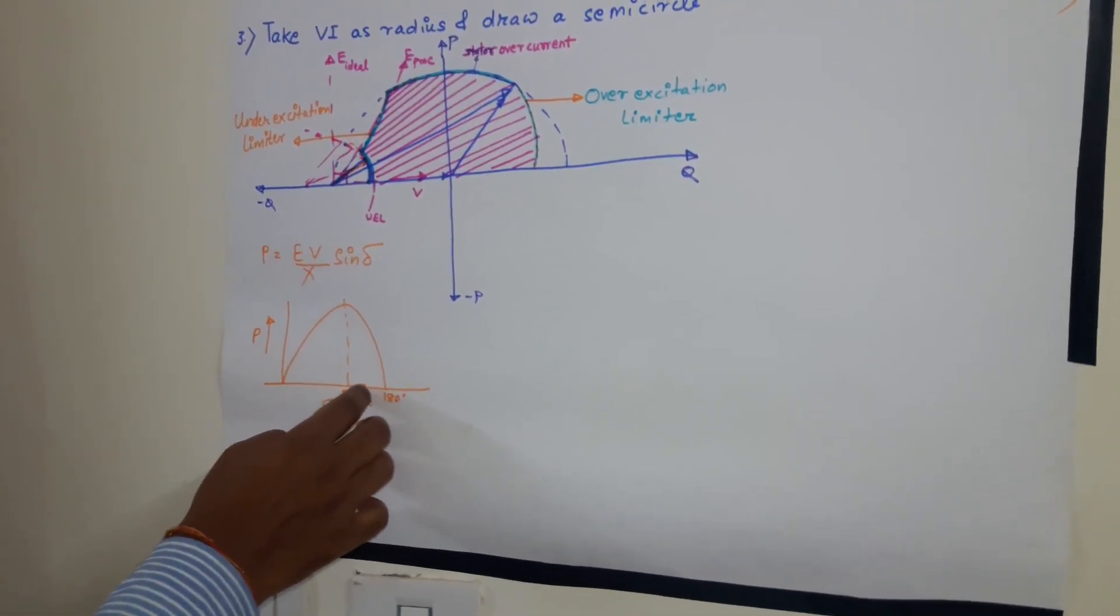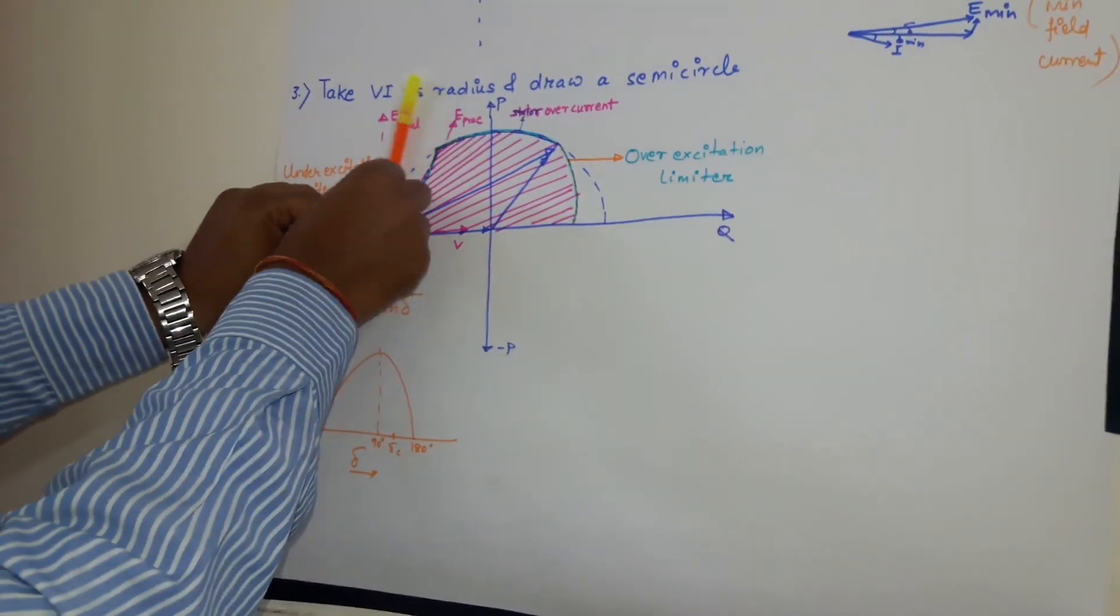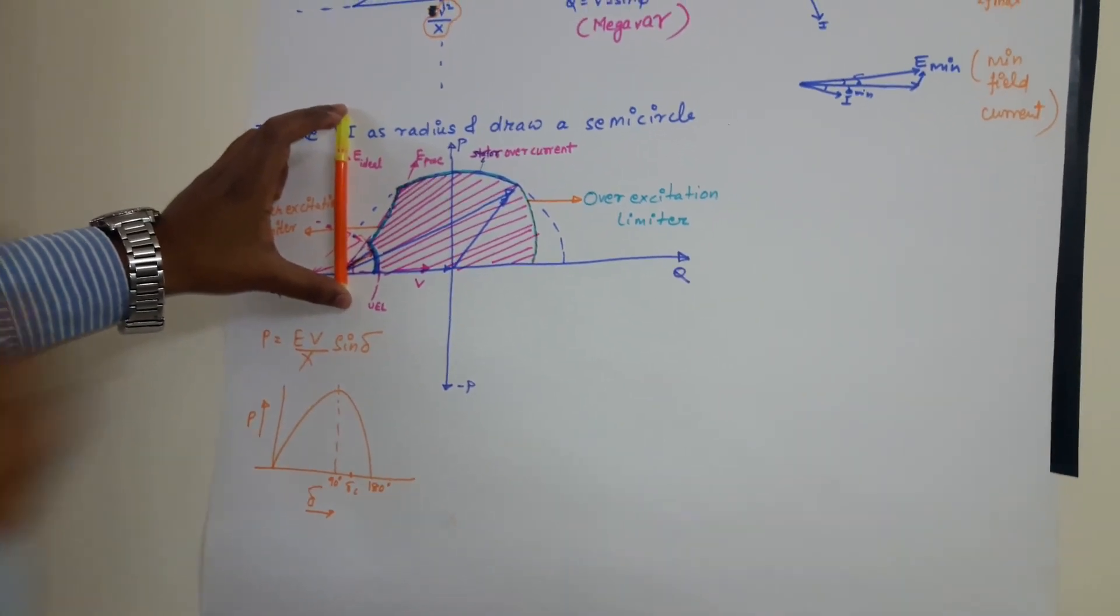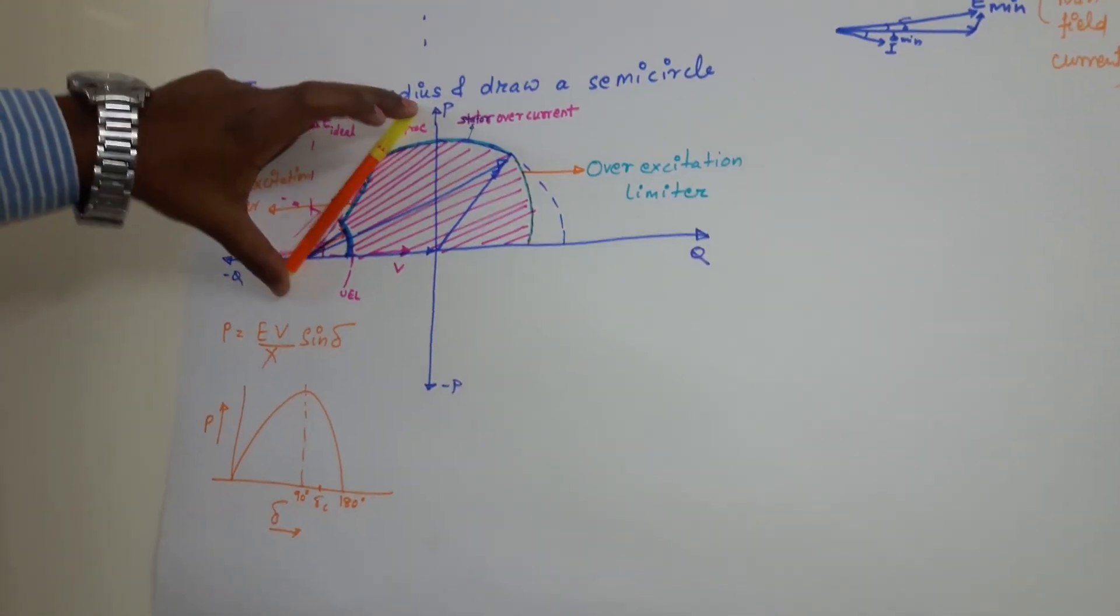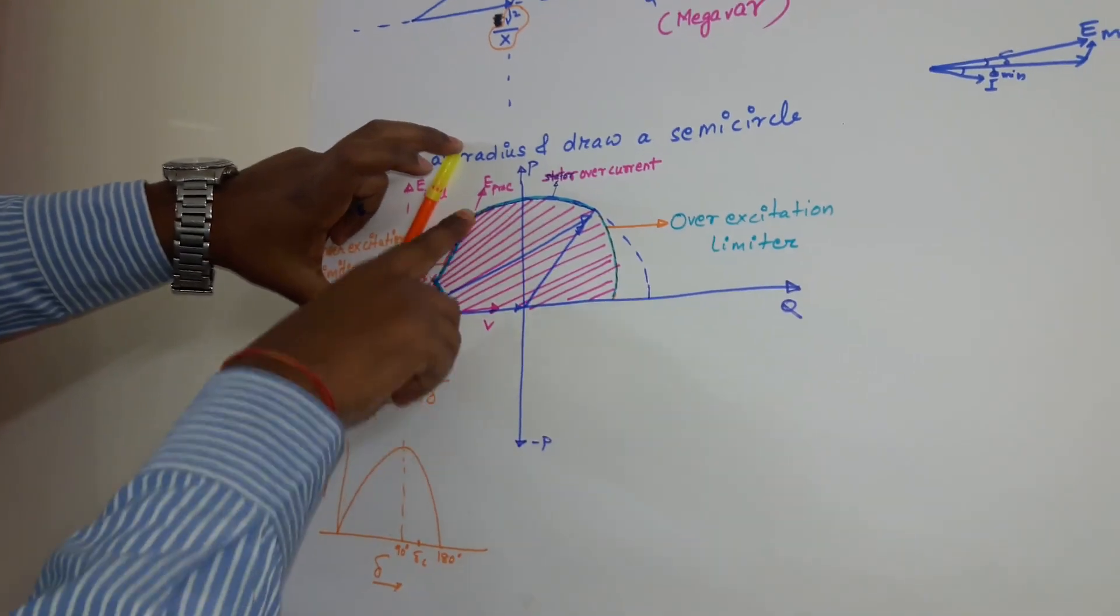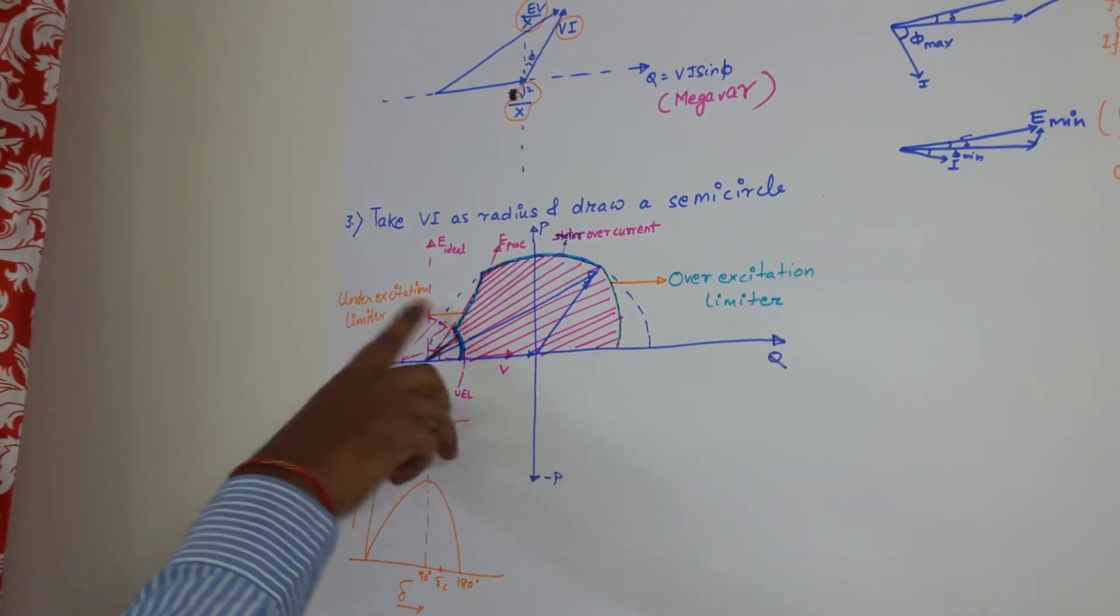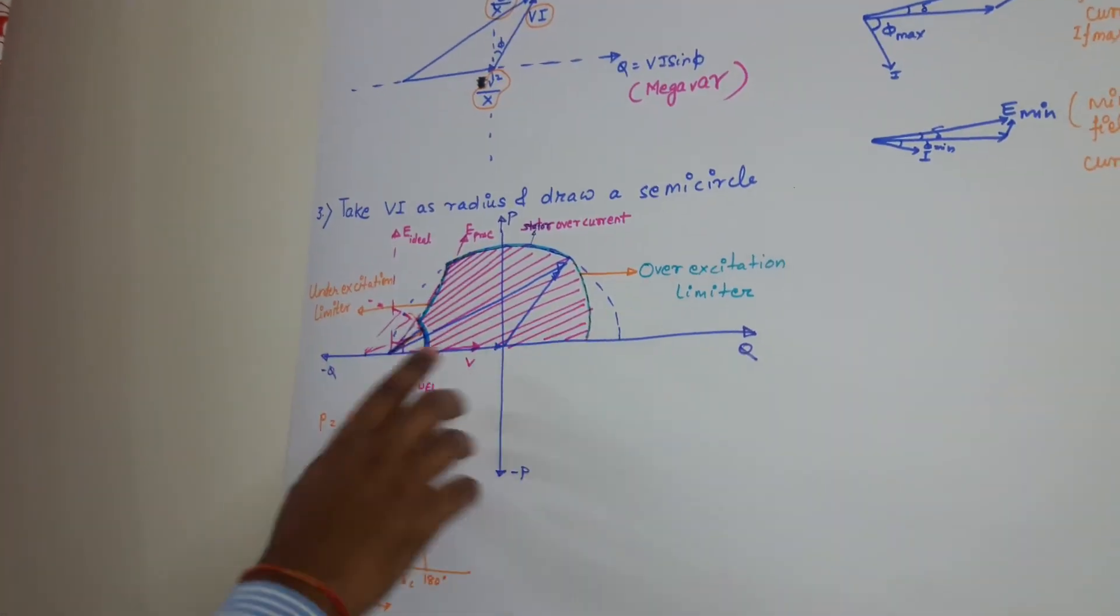So if this is V, generator can operate in a smooth manner up to this point. But this is ideal line. What is the practical line? It is somehow lesser than the 90 degree. So this is the safe zone for generator to operate. So we are also getting this load angle limiter line, which is also coming under under excitation limiter.